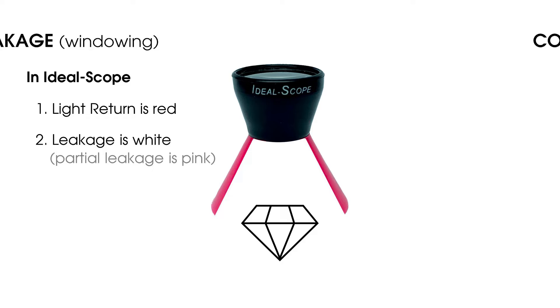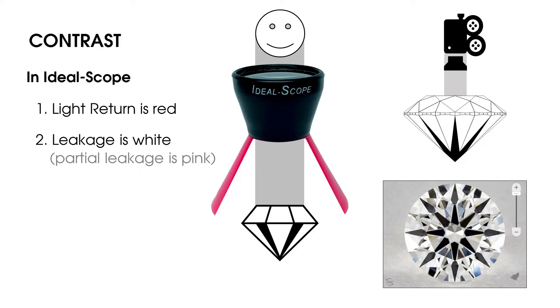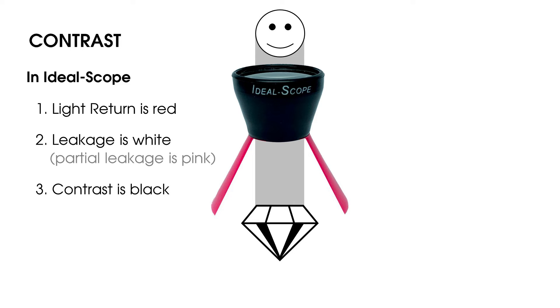That brings us to contrast. Some light from above will always be blocked by the viewer, creating dark patterns. You can see the contrast effect in diamond photos because the camera blocks light the same way a viewer does. The on-off contrast effect when diamonds move is a dramatic component of scintillation. In IdealScope analysis, the contrast pattern is black.